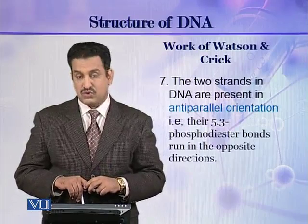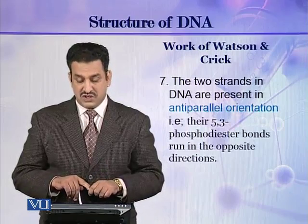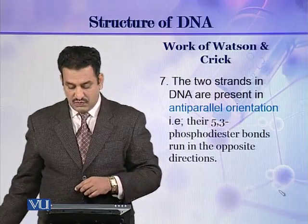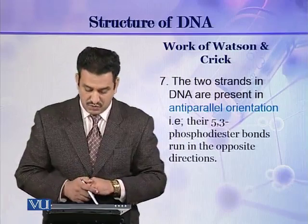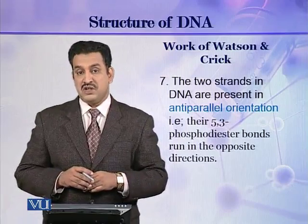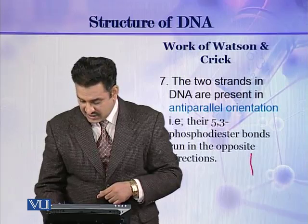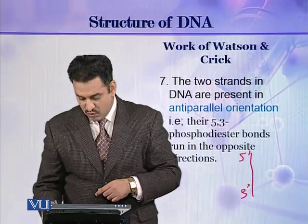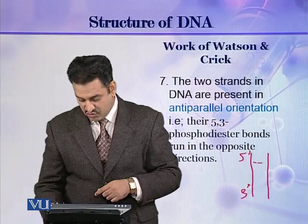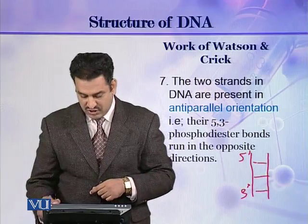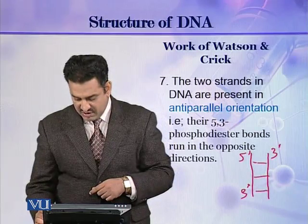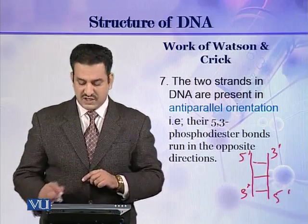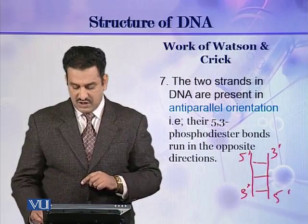They also described that the two strands of DNA are present in an anti-parallel orientation. That is, their 5' to 3' phosphodiester bonds run in opposite directions. If one strand has its 5' prime here and 3' prime here, the other strand will be in the opposite orientation — with its 3' prime here and 5' prime here. In this way, the two strands are present in an anti-parallel orientation.